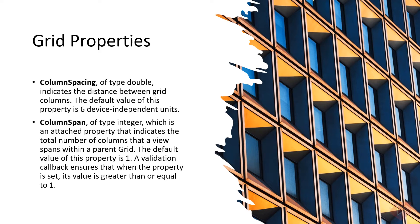ColumnSpacing, of type double, indicates the distance between grid columns. The default value is six device-independent units. ColumnSpan, of type integer, is an attached property that indicates the total number of columns a view spans within a parent grid. The default value is one, and a validation callback ensures its value is greater than or equal to one.